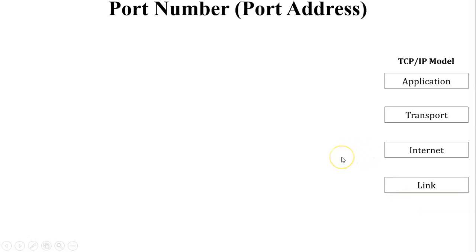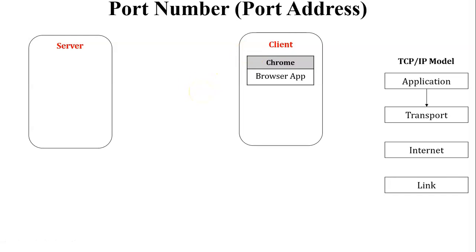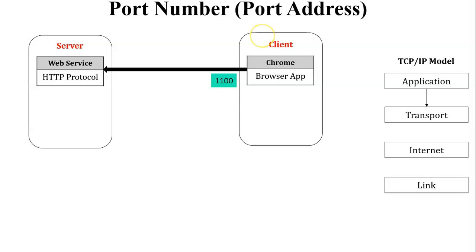In the TCP/IP model, whenever data transfers from the application layer to the transport layer, port numbers are assigned, which are associated with TCP and UDP protocols. Let us see one example of process-to-process communication. Here in the diagram, one is the server and one is the client. The client uses a browser application and sends a request to the server to access web services. The client request is sent from a registered port number.